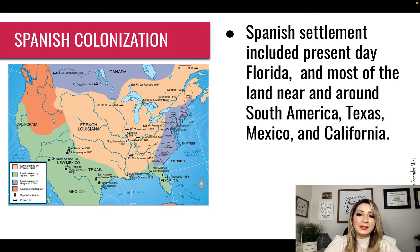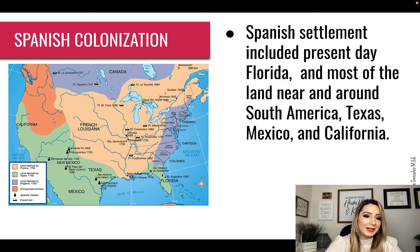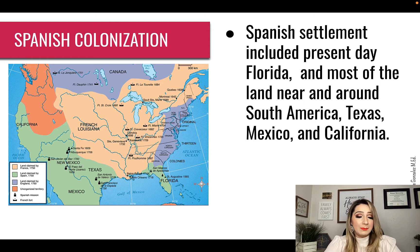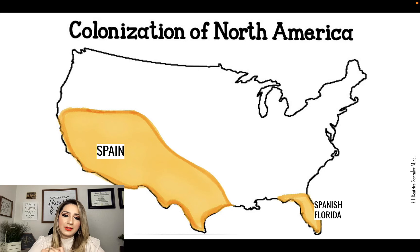Spanish settlement included present-day Florida and most of the land near and around South America, Texas, Mexico, and California. Go ahead and take a look at the map — you'll notice that Spain is the green areas. You see Florida and present-day California, Texas, New Mexico, and Mexico of course. On your graphic organizer in the map section, I want you to press pause right now and color in the area that Spain claimed.